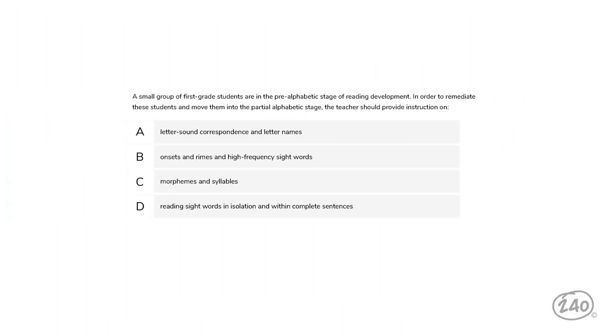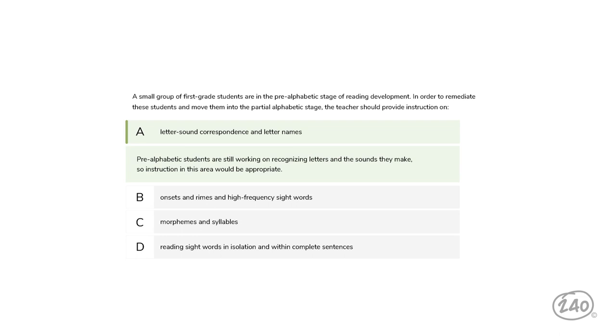From Competency 5 on stages of word recognition: A small group of first grade students are in the pre-alphabetic stage. To remediate these students and move them into the partial alphabetic stage, the teacher should provide instruction on: (A) letter-sound correspondence and letter names, (B) onsets and rhymes and high-frequency sight words, (C) morphemes and syllables, or (D) reading sight words in isolation and within complete sentences. The correct answer is A — pre-alphabetic students are still working on recognizing letters and the sounds they make, so instruction in that area is appropriate.